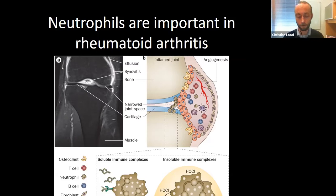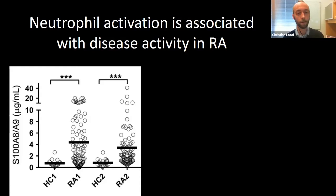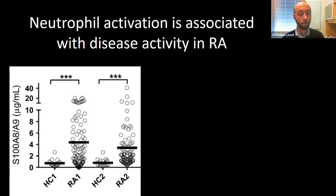We analyzed levels of S100A8/A9 — better known as calprotectin — in circulation of RA patients and healthy controls. This inflammatory marker is released by activated neutrophils and is commonly measured in feces from IBD or Crohn's patients, but can also be measured in circulation as a marker of neutrophil activation. We found that RA patients have much higher levels of calprotectin compared to healthy controls, and the levels correlate beautifully with disease activity, validating that our patients have activated neutrophils in circulation.